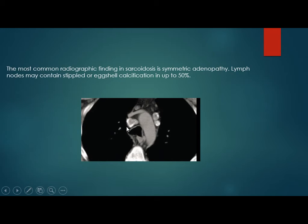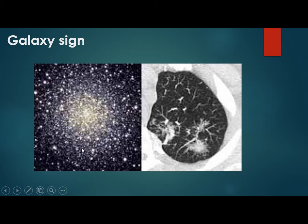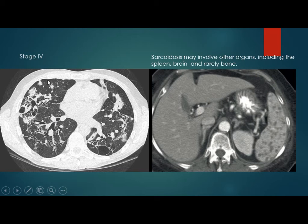Sarcoidosis also causes eggshell calcification of lymph nodes in about 50% of cases. On CT, there is upper lobe predominance with perilymphatic nodules along the course of the pulmonary lymphatics — peribronchovascular, subpleural, or within the interlobular septa. Sometimes these nodules coalesce and form a large nodule giving the appearance of the galaxy sign — a large nodule with small satellite nodules around it. In Stage 4 of sarcoidosis, we see tractional bronchiectasis, cystic change, interlobular thickening, and reticulation. Sarcoidosis also affects other organs like spleen and brain, and rarely bone.